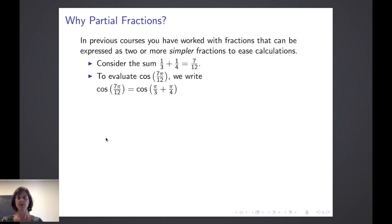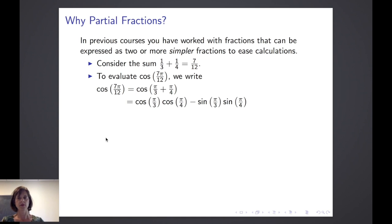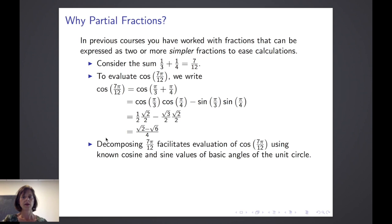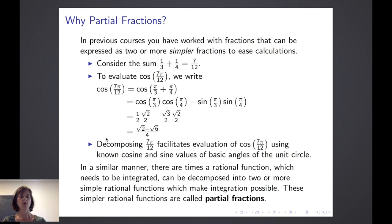So for example, cosine of 7π/12 is the same thing as the cosine of π/3 plus π/4. Now you may not know the cosine of 7π/12, but you should know the cosine and sine of both angles π/3 and π/4. You should also know the angle addition formula for cosine: cosine of the first angle times cosine of the second angle minus sine of the first angle times sine of the second angle. So decomposing 7π/12 facilitated the evaluation using known values. In a similar way, a rational function which needs to be integrated can be decomposed into two or more simple rational functions which make integration possible.